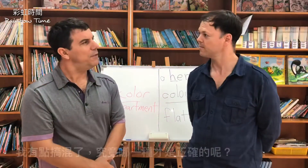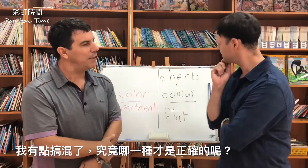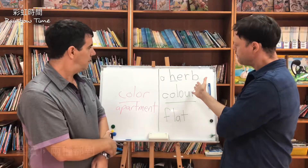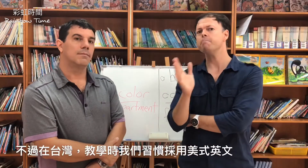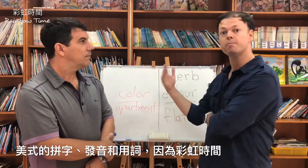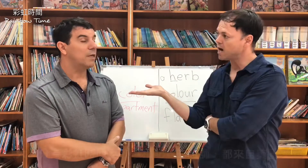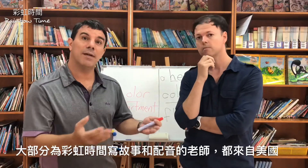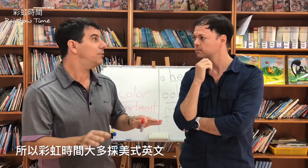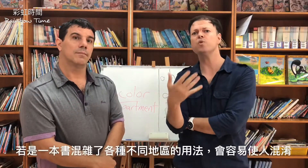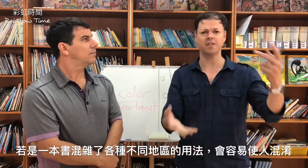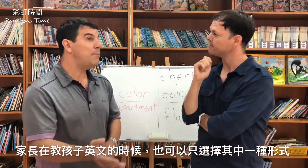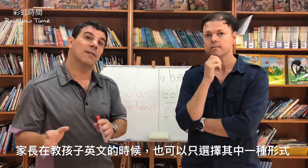So I'm a little confused, Teacher Quintus — which one is right and which one is wrong? Well, they're both right. But in Taiwan, we prefer the American spelling and American vocabulary words because of Rainbow Time. Most of the people who write and record for Rainbow Time are Americans, so we try to stay true to that. It would be very confusing to have lots of different kinds of English in one book. So if you're a parent, maybe pick one style and stick to that one style.